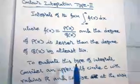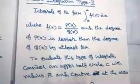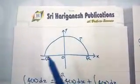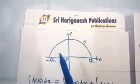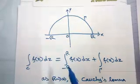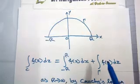To evaluate this type of integral, consider an upper semicircle C with radius r and centre at the origin, such that C is gamma plus the segment from minus r to plus r. The integral over C of f(z) dz equals the integral from minus r to plus r of f(x) dx, plus the integral over gamma of f(z) dz.